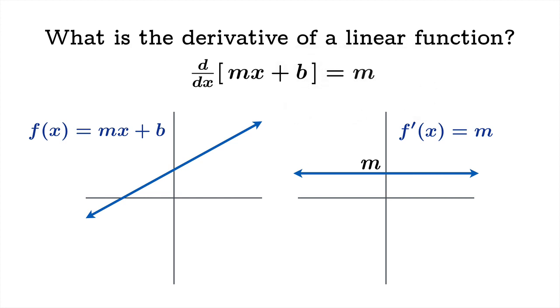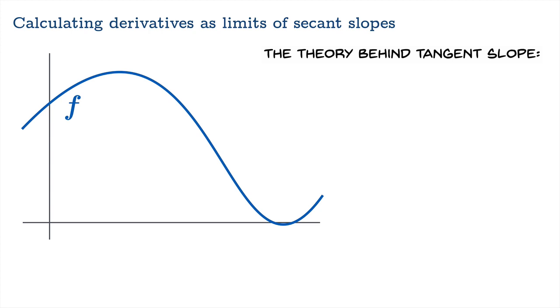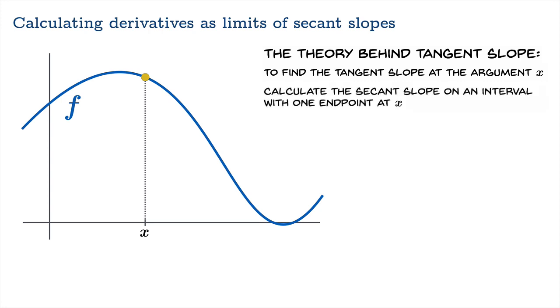Now that's the intuitive way to look at this, but we should go back to the official definition of derivative to verify that everything is what we think it is. So let's remember the theory behind tangent slope. To find the tangent slope at the argument x, we calculate the secant slope on an interval with one endpoint at x. So we're going to choose another endpoint off to the side and calculate the slope of this so-called secant line.